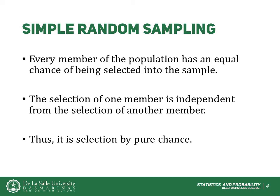Simple random sampling occurs when every member of the population has an equal chance of being selected into the sample. In addition, the selection of one member is independent from the selection of another member. In theory, the strategy of simple random sampling involves selection into a sample by pure chance.